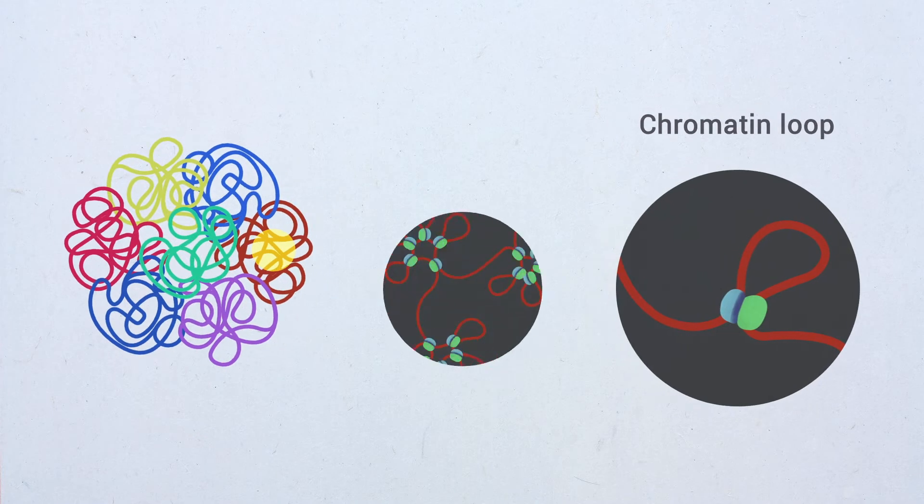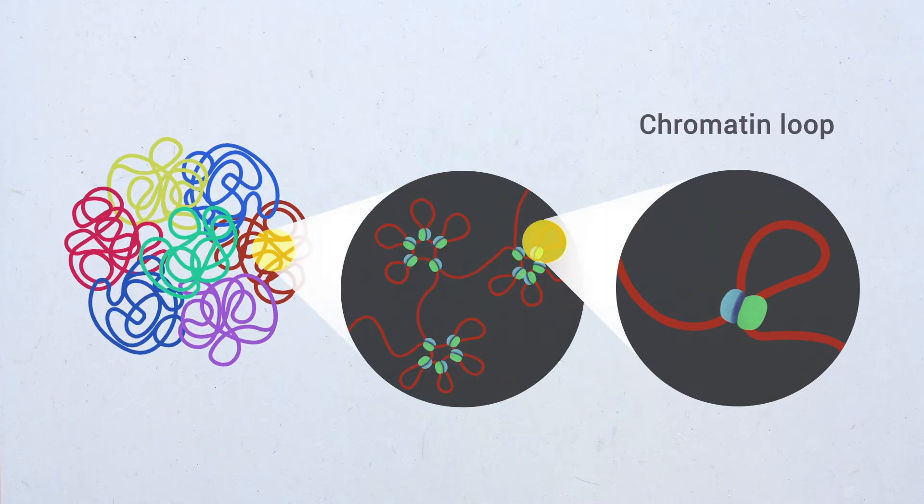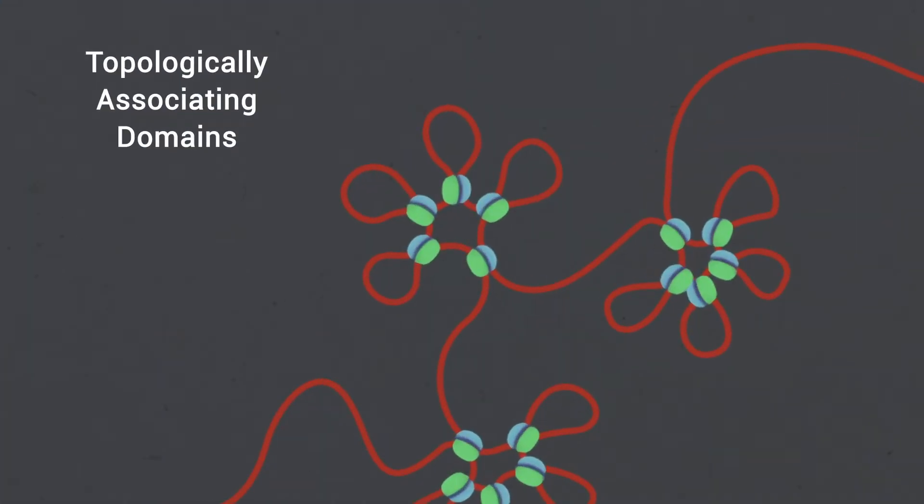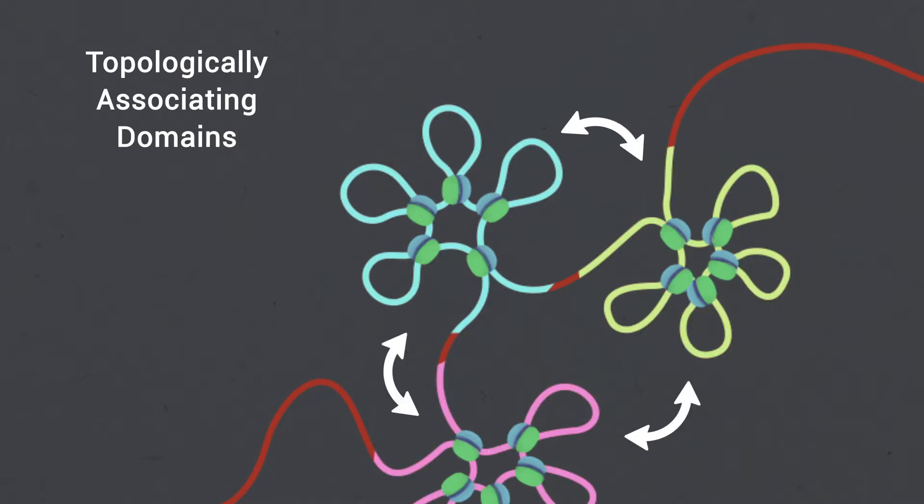In addition to loops, interphase chromatin is organized into higher order structures such as topologically associating domains that represent regulatory domains defined by preferential intra-domain contacts, whereas contacts across topologically associating domain borders are less frequent.